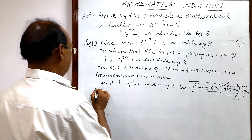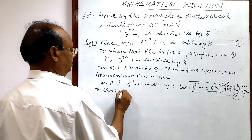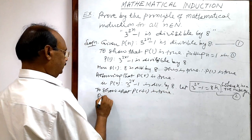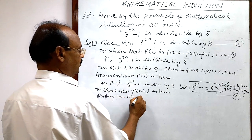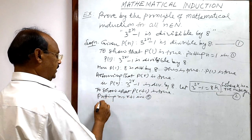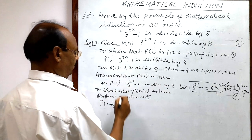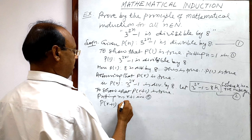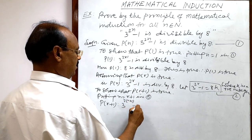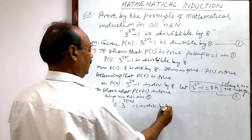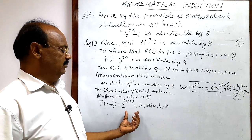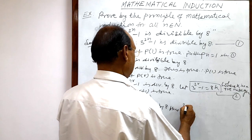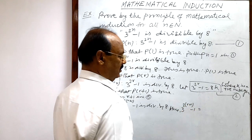Third and last step: to show that P(r+1) is true. Putting n equal to r plus 1 in relation number 1, we get P(r+1) will be 3 to the power 2 into (r plus 1) minus 1 is divisible by 8. We have to show that this is divisible by 8.